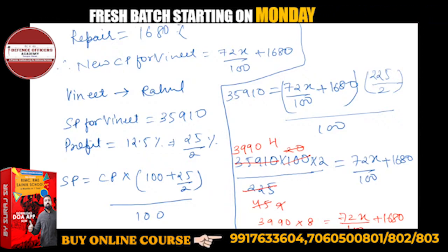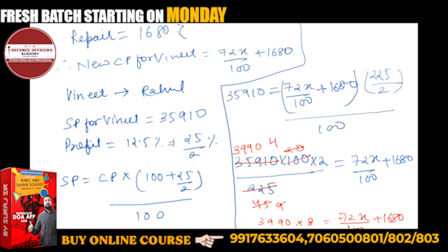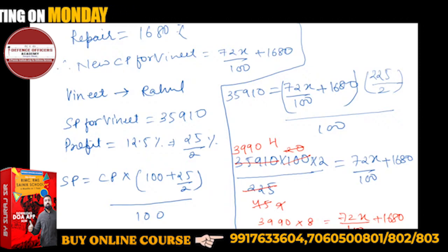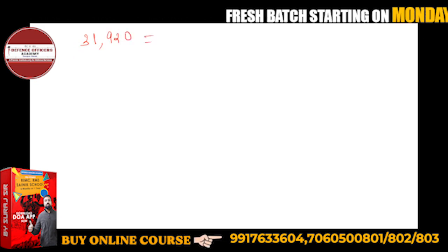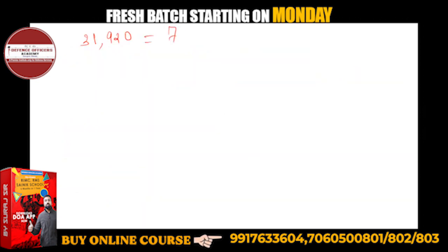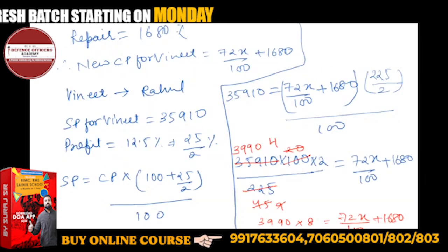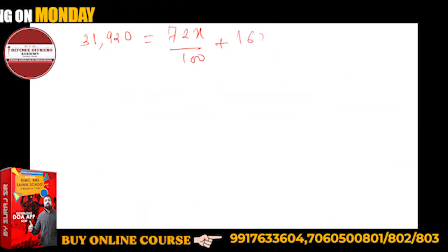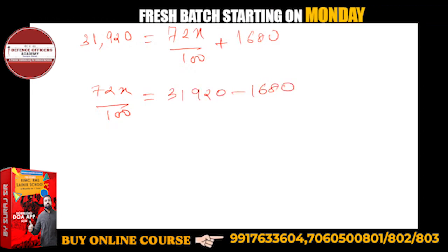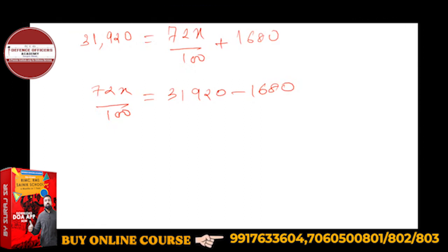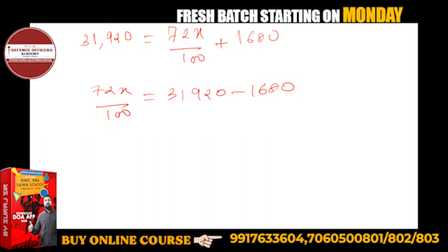39,990 into 8, left hand side how much? 8 times 9 is 72. So this will come 31,920 in the left hand side is equal to 72X upon 100 plus 1680. So 72X upon 100 is equal to 31,920 minus 1680. Subtract, 31,920 minus 1680.